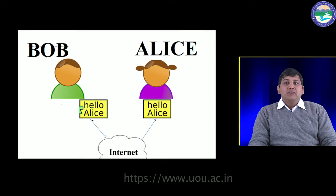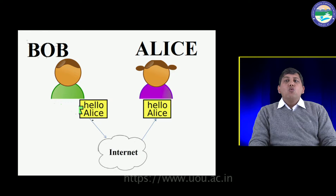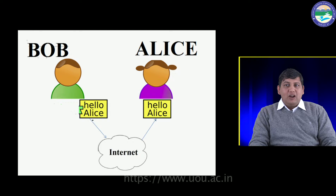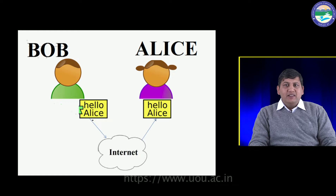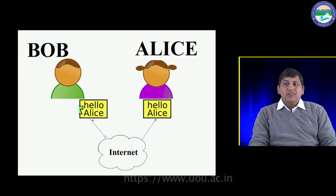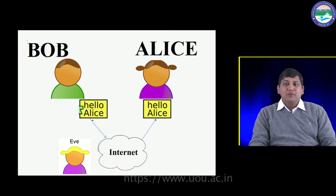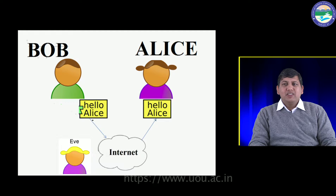I will explain the basic concept of cryptography using an example. Suppose there are two people, Alice and Bob, who want to talk and pass notes back and forth. These notes are private and they are using a public forum such as the internet for passing these notes. The goal is to secure this communication against adversities, and in this example the adversity is marked as Eve, which actually denotes eavesdropping.